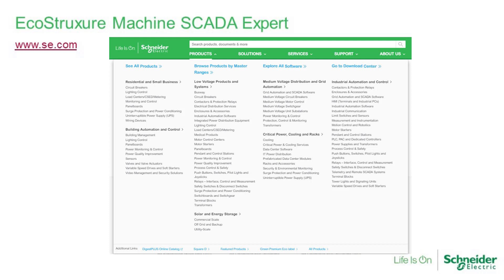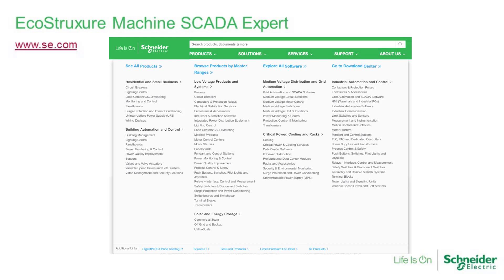For more information, please visit www.se.com. Information on EcoStructure Machine SCADA Expert is located under the Products menu option and then Human Machine Interfaces. You can also use the search tool on the website by typing or pasting the software name to find the product-related web page.